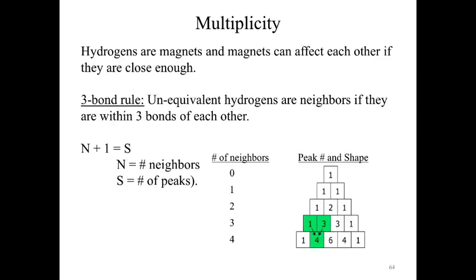The next level is now multiplicity. Hydrogens are magnets, and if those magnets are close enough to each other, they will interact with each other. So what is close enough? That is our three bond rule. Unequivalent hydrogens are neighbors if they are within three bonds of each other. A lot of people like to say it has to be three. That is not true. It has to be within three bonds. So it is very possible to have a hydrogen that is only two bonds away that is a neighbor, which is a tricky statement to make, but it is true.